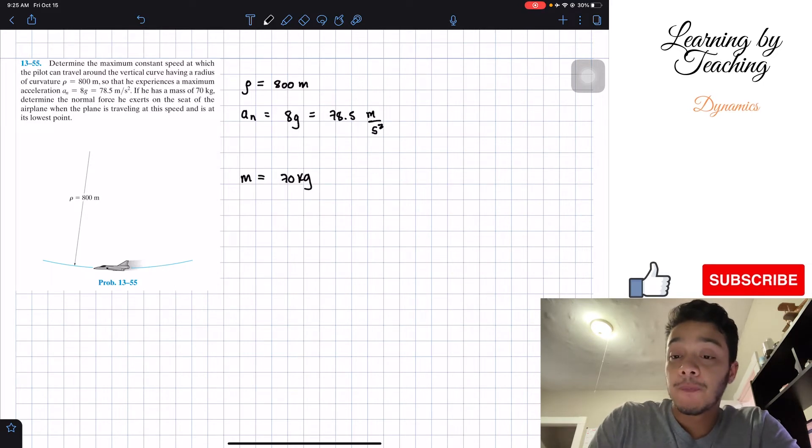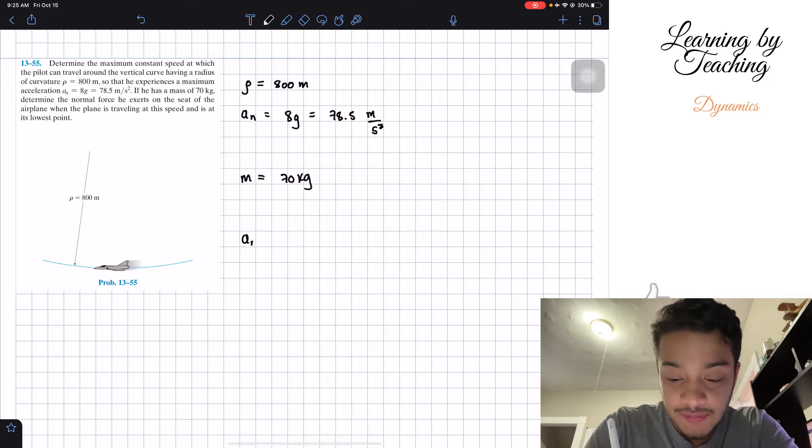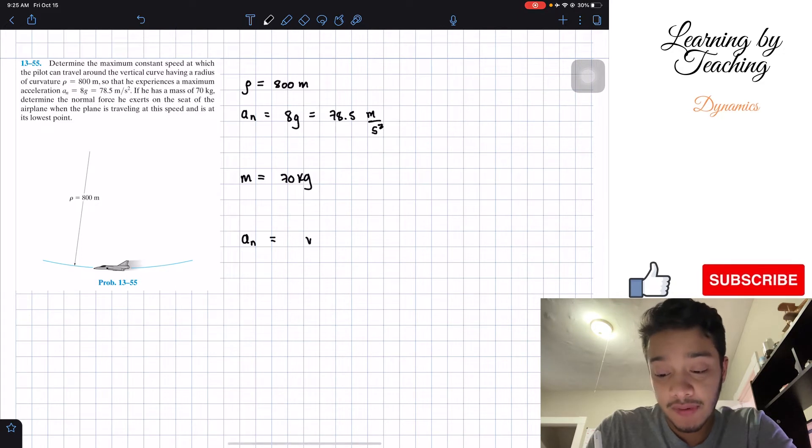The first question is to determine the maximum constant speed at which we can travel. And the good thing is that we can relate our normal acceleration with our velocity or our speed. And if we recall from previous chapters, our normal acceleration is related by velocity by this equation, where our normal acceleration is equal to velocity squared divided by our radius of curvature.